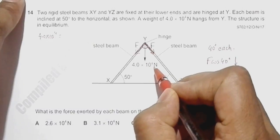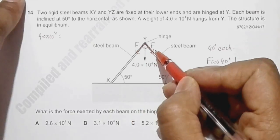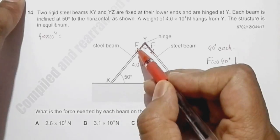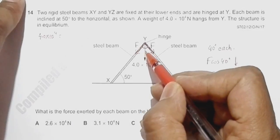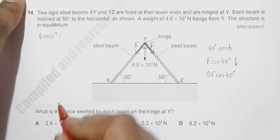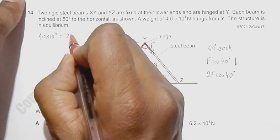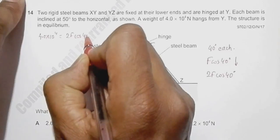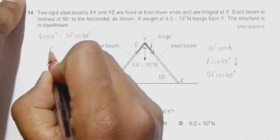So it is F and F. The component here is F cos 40, and the component here is F cos 40. Those two add up to make this 4 × 10^4 Newton, so it equals 2F cos 40 degrees. This gives us F equals...